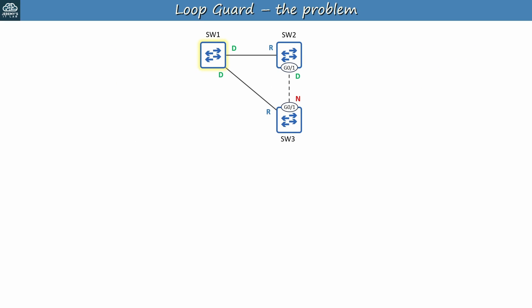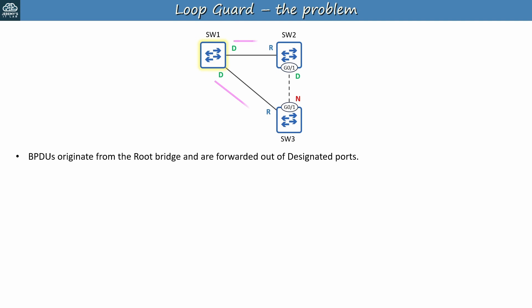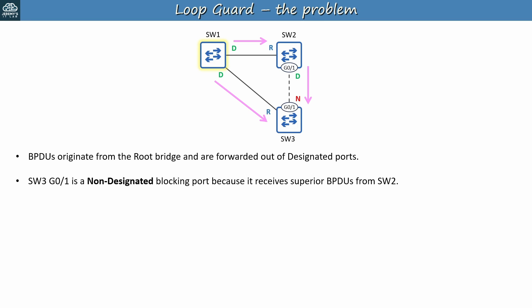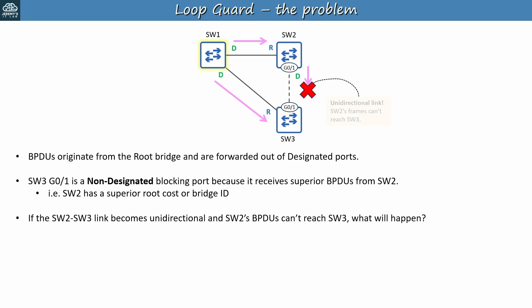So what's the problem with a unidirectional link? Loop Guard doesn't prevent unidirectional links, but it can protect against the negative effect that a unidirectional link has on STP. BPDUs originate from the root bridge and are forwarded out of designated ports every two seconds, and these BPDUs are how the switches share information to determine the STP topology — which interfaces should be forwarding and which should be blocking. In this network, SW3 G0-1 is a non-designated port because it receives superior BPDUs from SW2. But if the SW2-SW3 link becomes unidirectional and SW2's BPDUs can't reach SW3, what will happen?